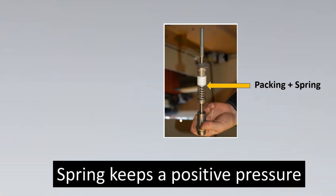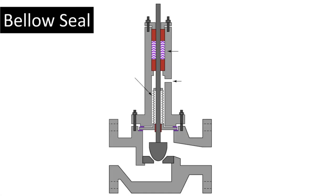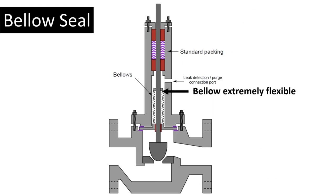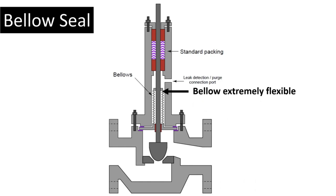However, the spring itself could fail or its tension could reduce. The next solution is something called a bellow seal — a level up even beyond live loading. Here is your standard packing, the bellows, and a leak detection port. The bellow is an uninterrupted tube with no place for leaks to develop. Bellows are extremely flexible, so there is neither leakage nor friction. The only concern is if the bellow ruptures. For that case, a pressure transmitter is placed at the leak detection port — if the bellow fails, pressure in that chamber increases and an alarm is triggered. Leakage is greatly reduced by bellow seals.